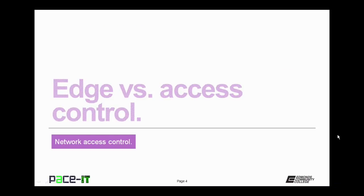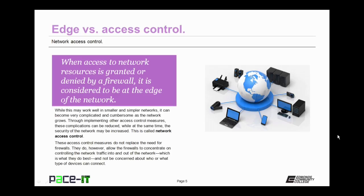Of course, I'm going to begin by talking about edge versus access control. When access to network resources is granted or denied by a firewall, it is considered to be at the edge of the network, so that is edge control. While this may work well in smaller and simpler networks, it can become very complicated and cumbersome as the network grows.